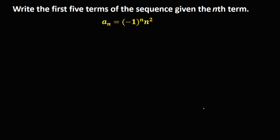So let's have this problem. Write the first five terms of the sequence given the nth term. So that's a sub n equals negative 1 to the power n times n squared.